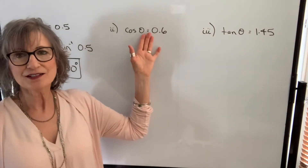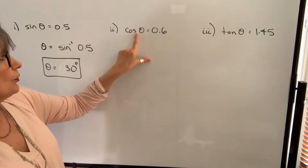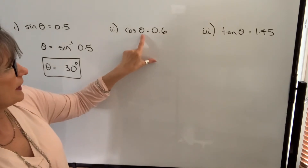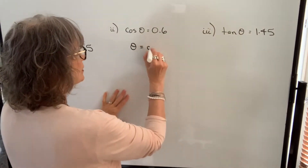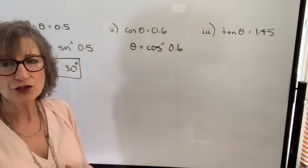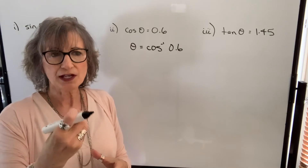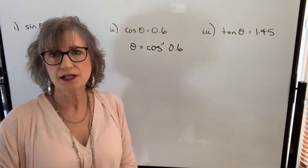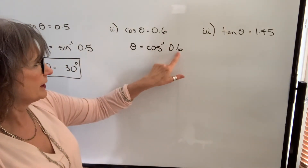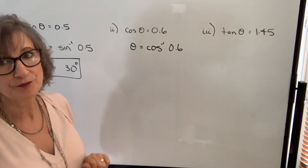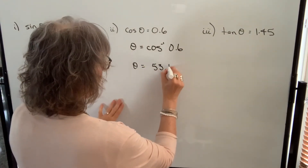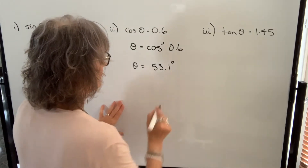Let's try the next example. If we know the cosine ratio of some angle is 0.6 and we want to find that angle, we're going to take the inverse cosine of 0.6. On your calculator, use your second function and cosine, or your inverse function and cosine. The order depends on which calculator you have — either enter the ratio first and then the function, or the function first and then the ratio. You should get 53.1 degrees.